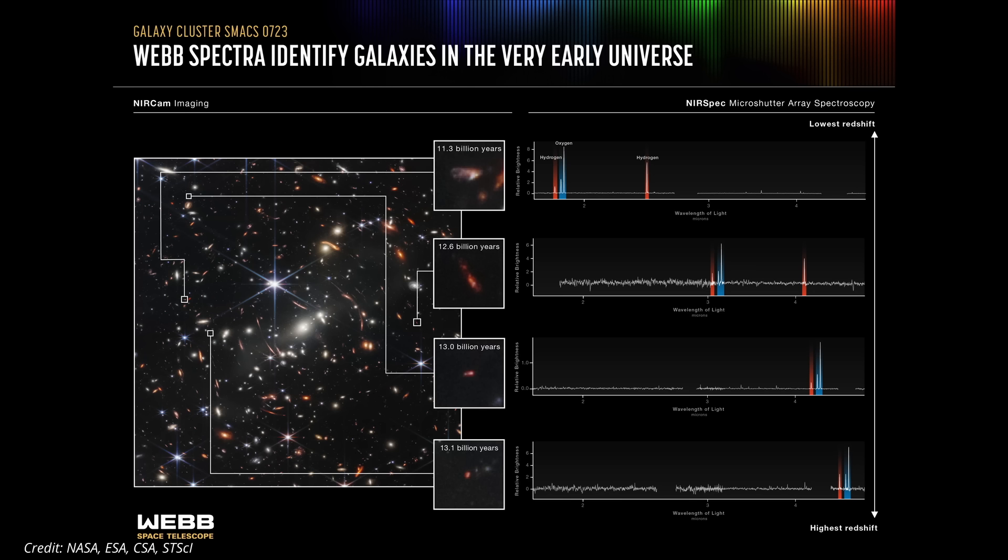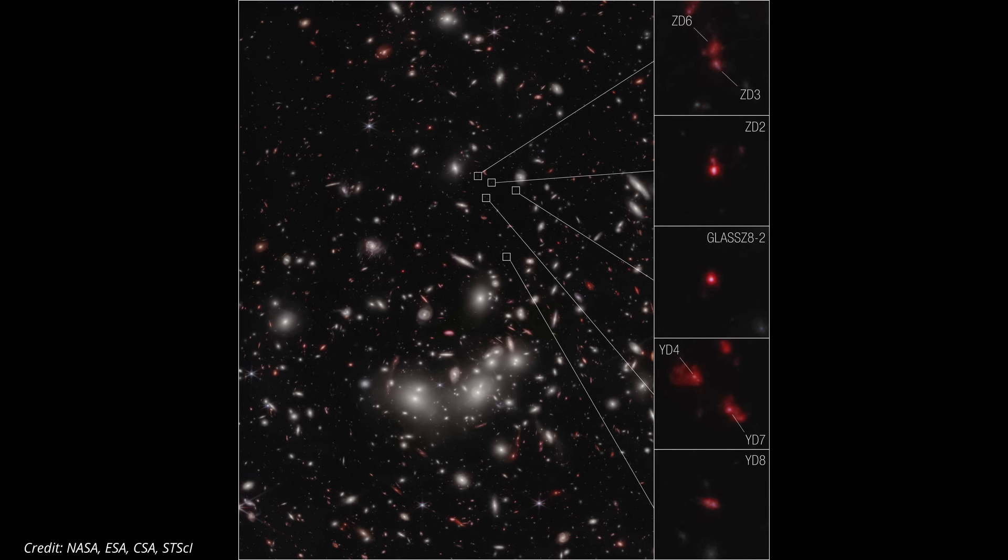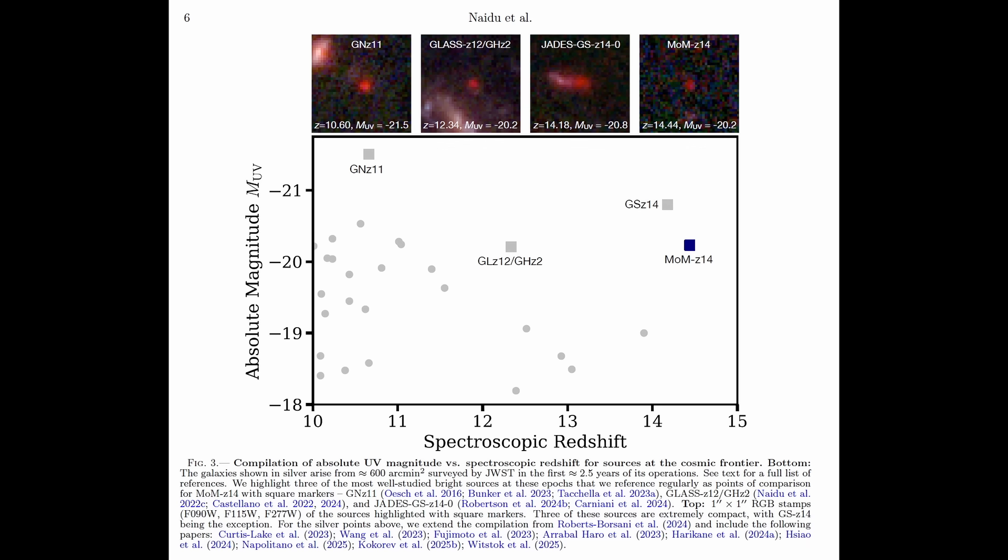But JWST is finding the opposite. In tiny patches of sky, the deeper we look, the more galaxies appear: bright, compact, and abundant.